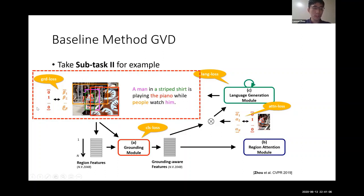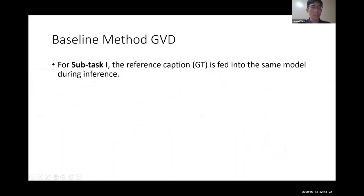So this part is the essential module for our subtask 2. And here we get the caption, the description of the video, and at the same time, the grounded regions in the video. And for subtask 1, because we have the reference caption, we can just feed it into the model during inference. So we do not have to generate a caption by our model.